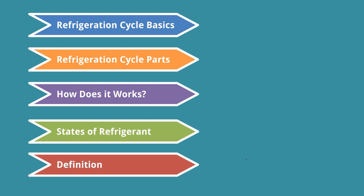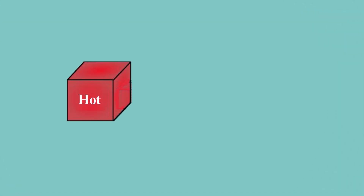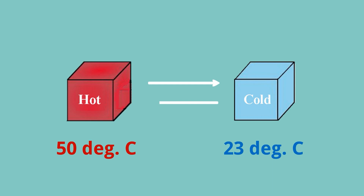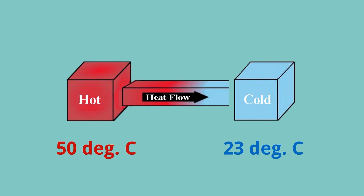Let us consider a hot body kept at 50 degrees centigrade and a cold body at 23 degrees centigrade. Now, what do you think — will heat flow from the hot body to the cold body, or from the cold body to the hot body? Definitely it will go from the hot body to the cold body, or from higher temperature to lower temperature.